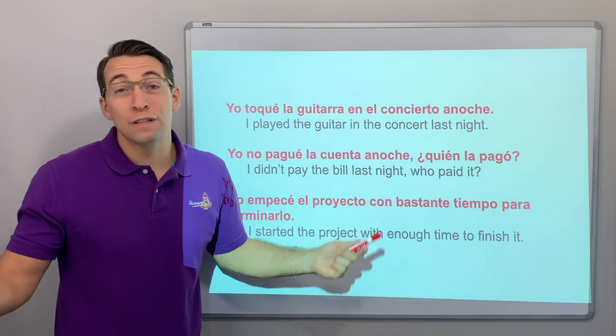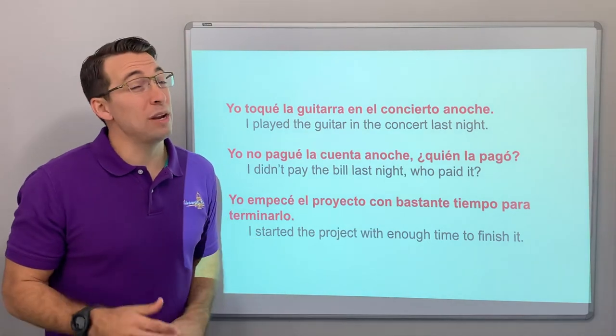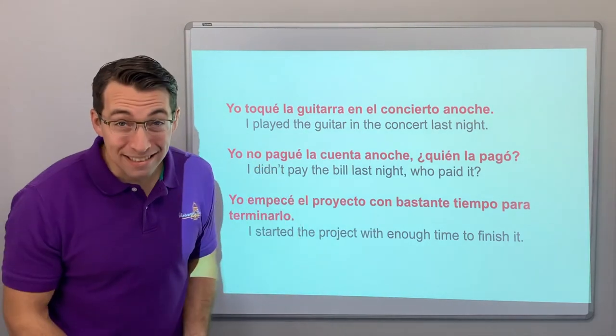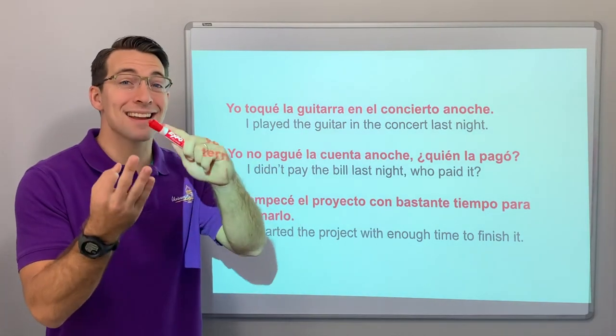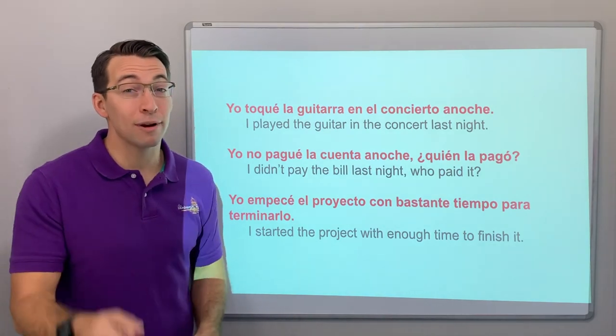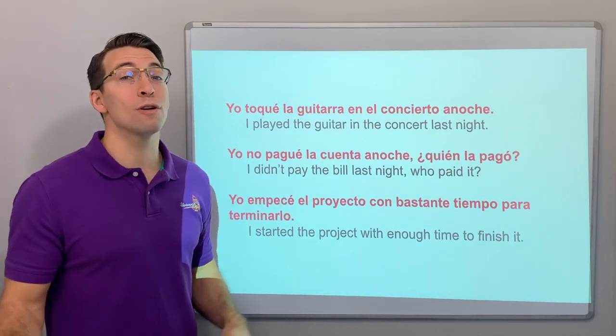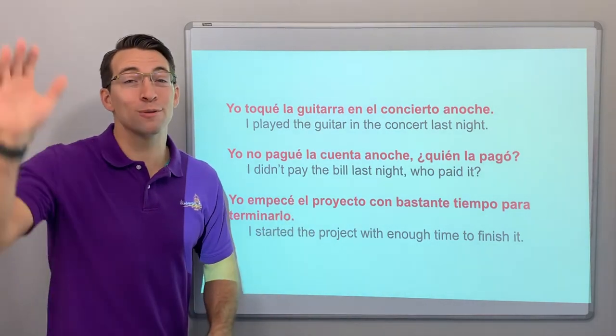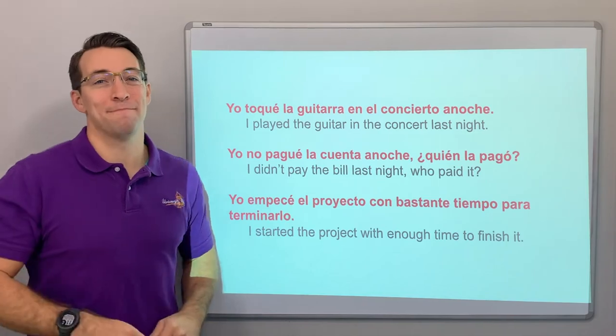Hopefully this video will help. Remember, irregulars in the preterite are abundant. So: -car, -gar, and -zar verbs are irregular in the yo-form in the preterite. Have a good one — we will see you next time. Thanks, guys.